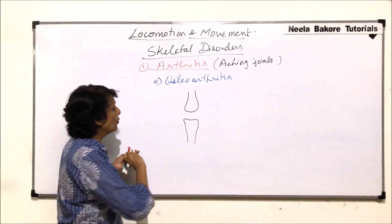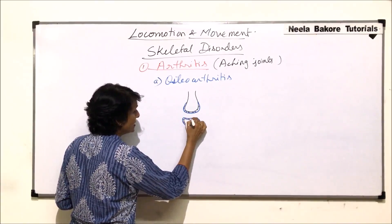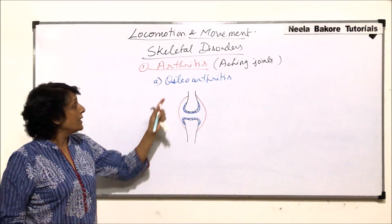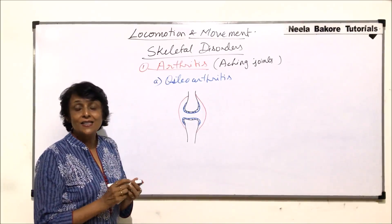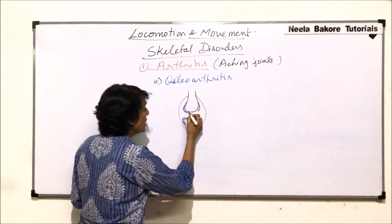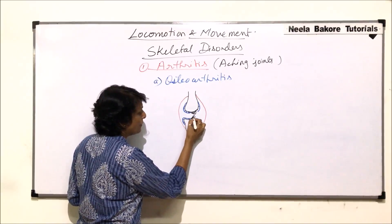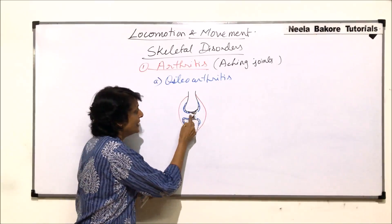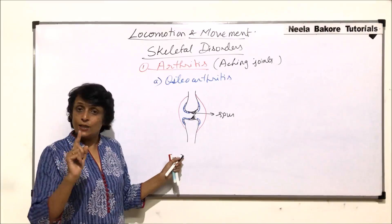Both bones have a thin layer of cartilage — these are articulating cartilages. Surrounding this there is the synovial membrane. In the case of osteoarthritis, one reason is this cartilage starts to degenerate. When this cartilage degenerates, it gets replaced by bony spurs — outgrowths that are formed. When a person walks and there is weight on this joint, the two bones come closer and these pointy structures, known as spurs, touch each other, which is extremely painful.